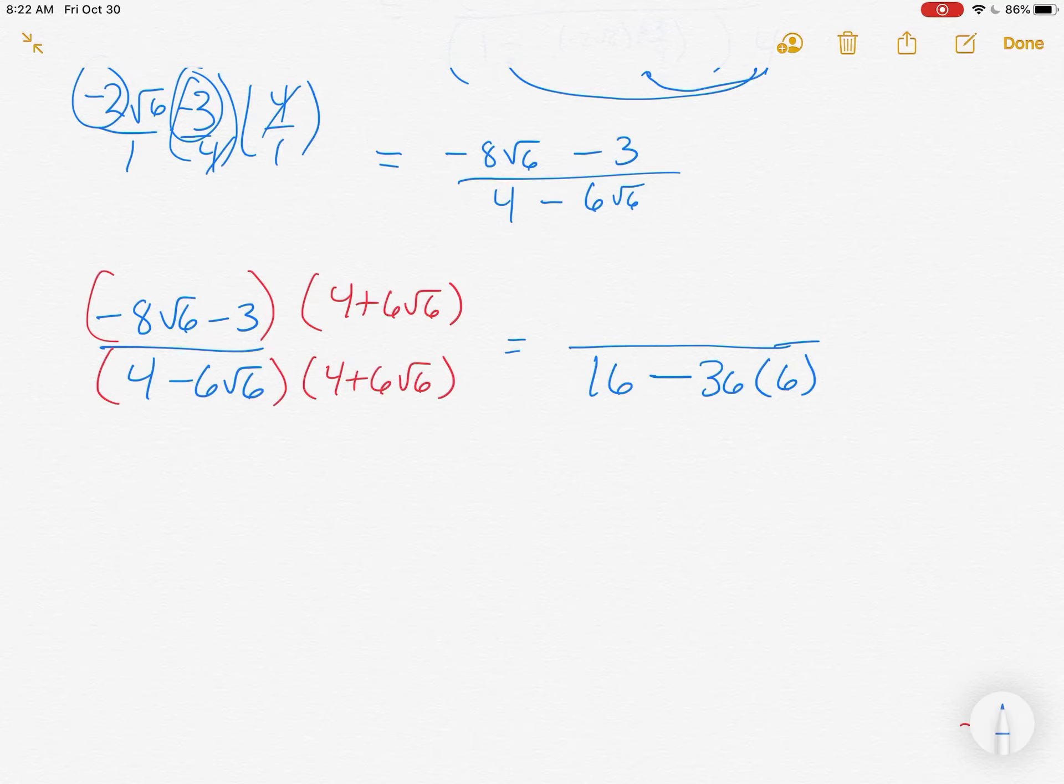On the top what do we get? Well we get a bunch of stuff. We get negative 8 times 4 which is negative 32 root 6. So I'll just distribute this through. We get negative 8 times 6 which is negative 48, and root 6 times itself is times 6. And we run the 3 through, we get a negative 12 and we get a negative 18 root 6 out of that.